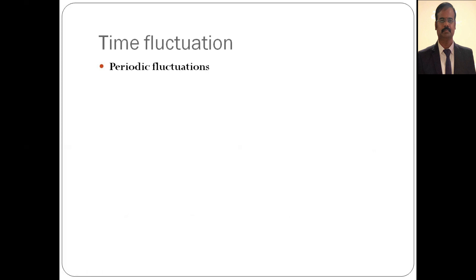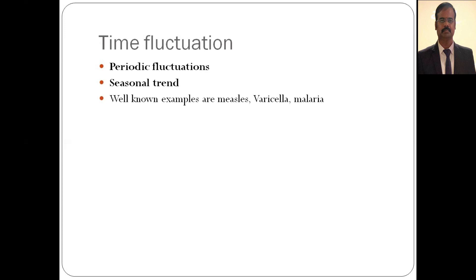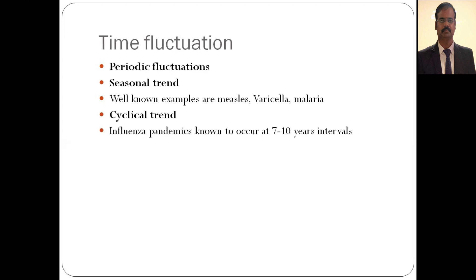Under periodic fluctuations, we have seasonal trend and cyclical trend. Seasonal trend refers to diseases like malaria, which increase around monsoon or post-monsoon season due to climatic conditions. Cyclical trends occur in diseases like influenza, which recur every three to ten years. The important factors for cyclical trends are antigenic variation of the agent — such as influenza's antigenic shift and antigenic drift — and herd immunity or the build-up of susceptible populations.